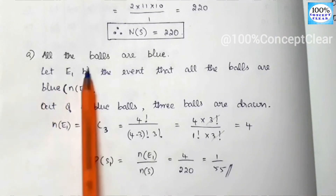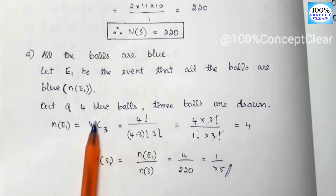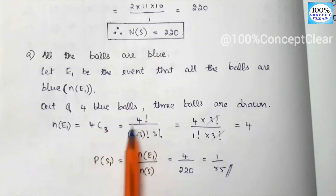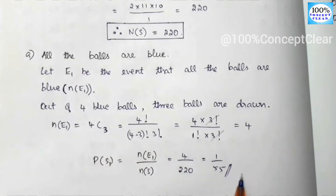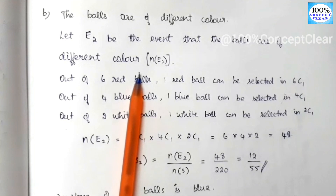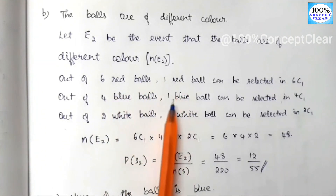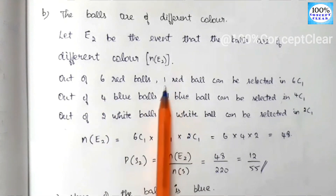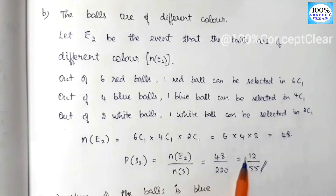To recap: first we found the sample space — 12 balls total, so 12C3 = 220. For Part A, all balls are blue: we choose 3 from 4 blue balls, 4C3 = 4, probability is 1 by 55. For Part B, balls of different color: we get 48, probability is 12 by 55.